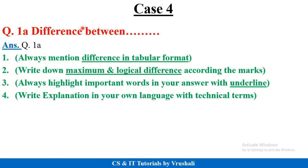Suppose your question is 'difference between.' Always mention the difference in tabular format — this is the first thing. Write down the maximum and logical differences according to the marks. If the question is for 5 marks, write down a maximum of 5 differences. Highlight all the important words by using underlines. Don't write vague points like 'this is slow, this is fast' — write according to proper sentences and points, because difference questions can give you full marks.